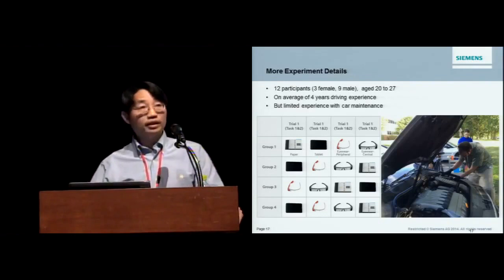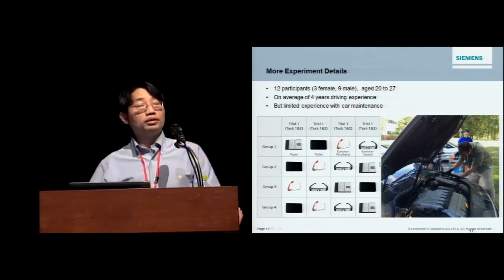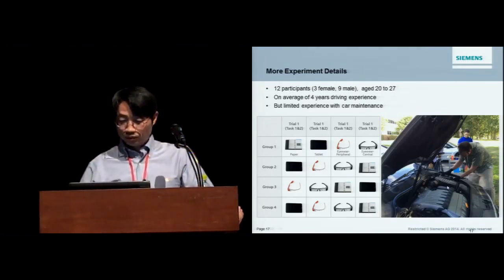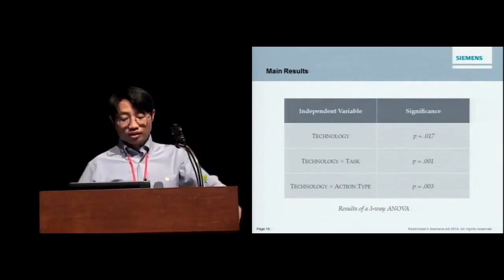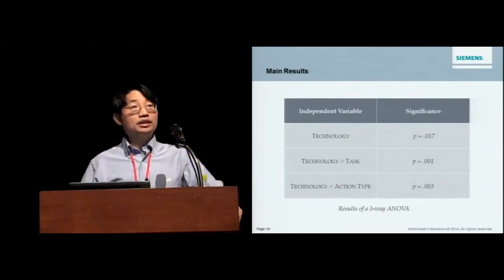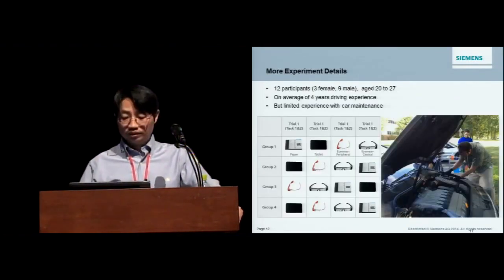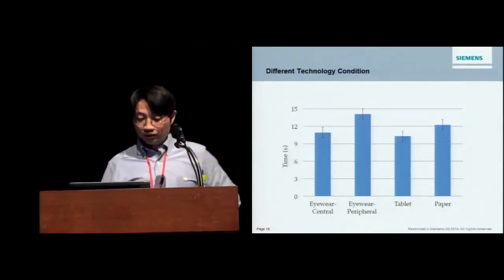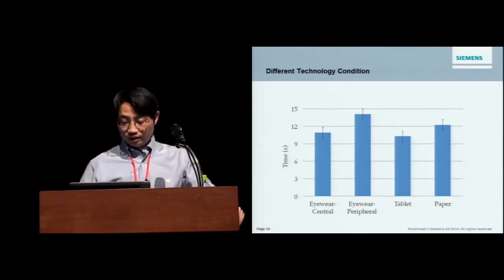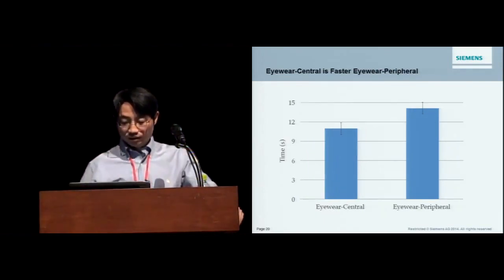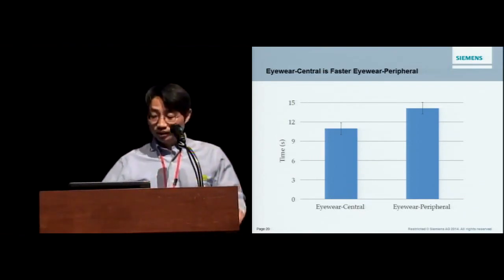So these are the instructions people will see using one of those four display conditions. And to sum up, these are the experiment variables. We want four different technologies, and a lot of different tasks, and four different action types. We want to study how they can impact people's performance, as well as their experience. A little bit more detail about the experiment, there are 12 participants, and in fact, they don't really have a lot of car maintenance experience. And then we counterbalance the order of different technologies, and we performed the experiment in our parking space, as you can see here. And so, this is the main result. Technology has a significant effect, and technology and task, and technology and action type all have significant interaction effects. So let's look a little bit into the detail. In this case, performance is the reaction time. So the longer, the worse. And as you look closely, you will find out, it turns out that eye-wear peripheral, namely Google Glass condition, actually performed much worse than the eye-wear central.